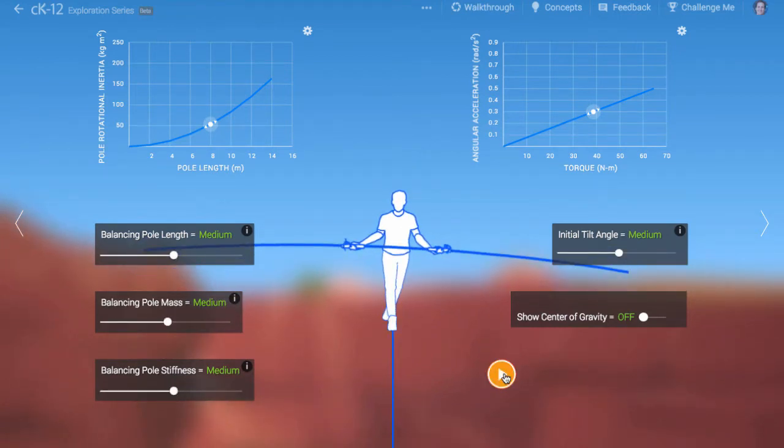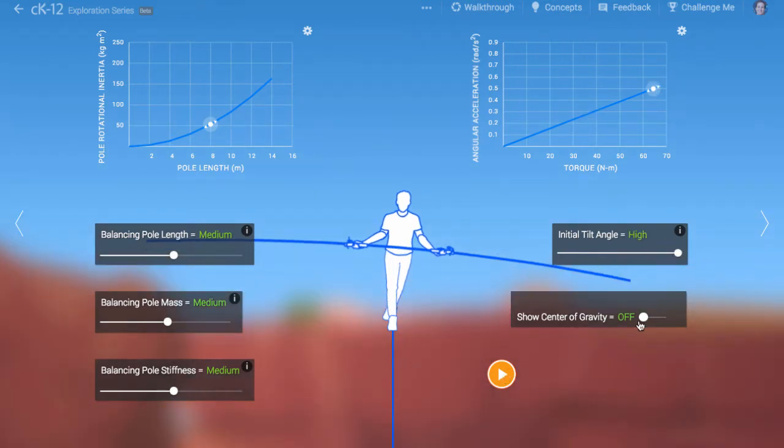The main problem he might face is that his center of gravity could become misaligned with the rope. A torque is generated in that case and this torque will cause angular acceleration about the pivot point at his feet. If the acceleration is too great, he won't have time to recover.